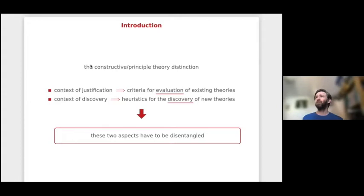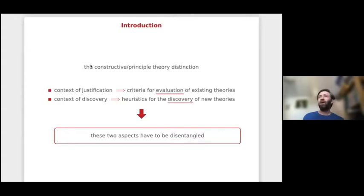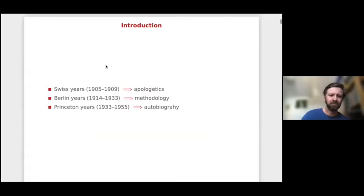The problem — why it is hard to understand what Einstein was trying to do in that short paper — is that the distinction has two meanings which are entangled and confused by Einstein, not only in that short paper but in many other passages. On the one hand, the distinction has to do with the context of justification: it is a distinction between two types of theory, two ways to justify a theory. But in other passages, the distinction has to do with the context of discovery: two types of methods for finding new theories, not classifying existing ones.